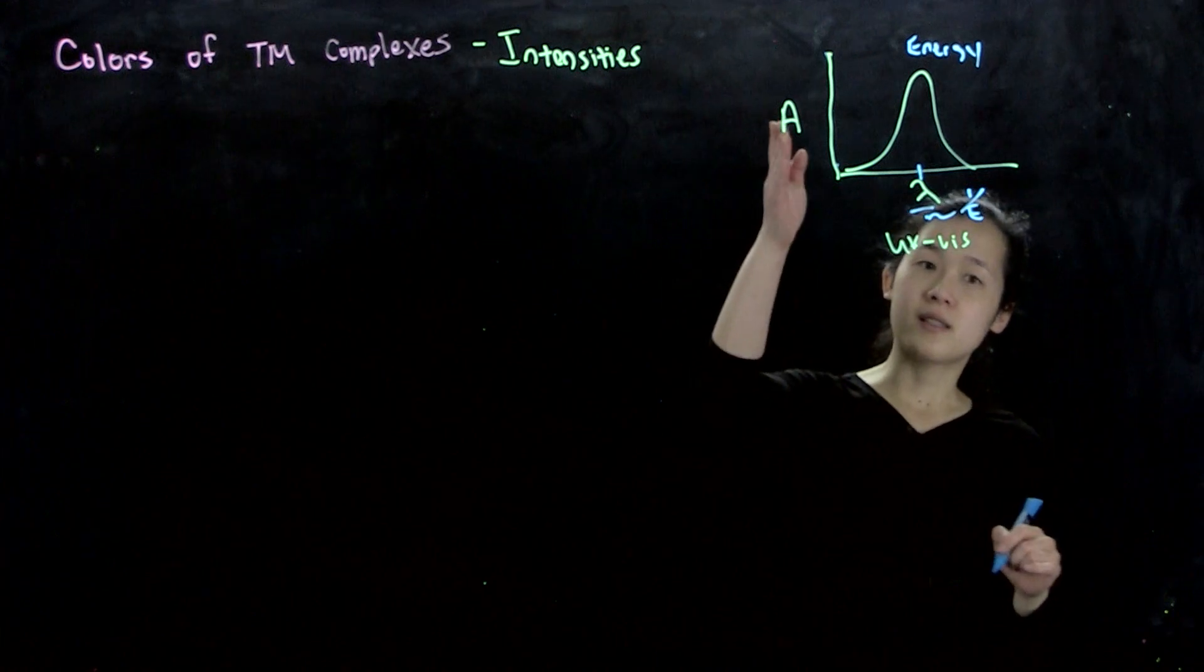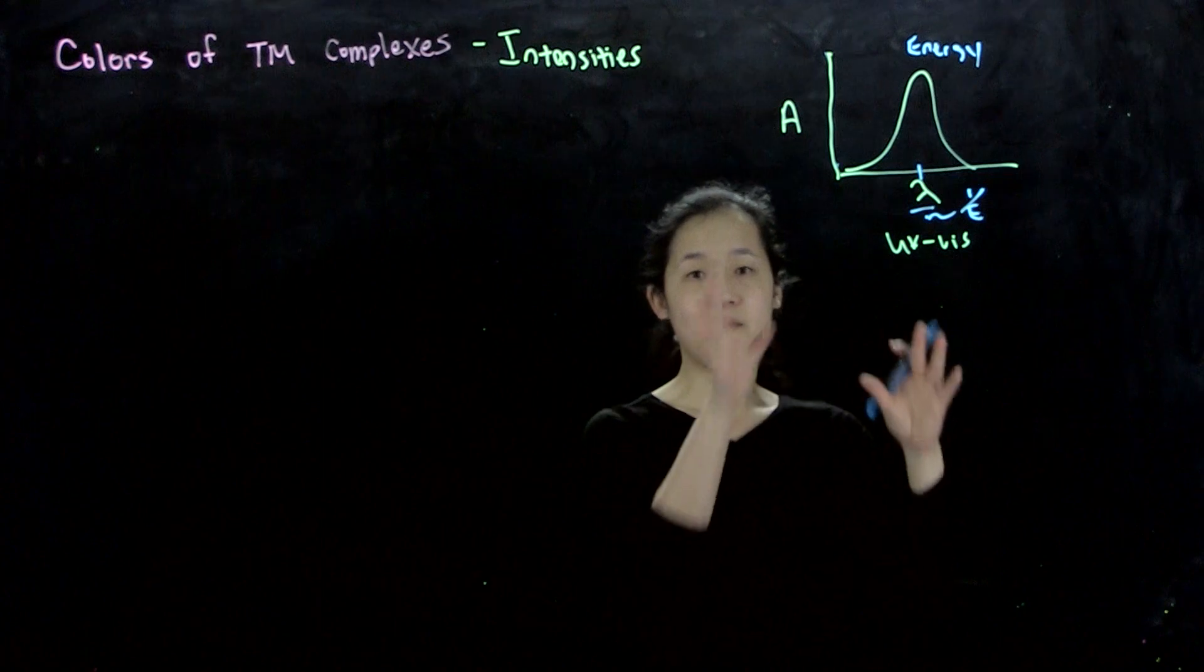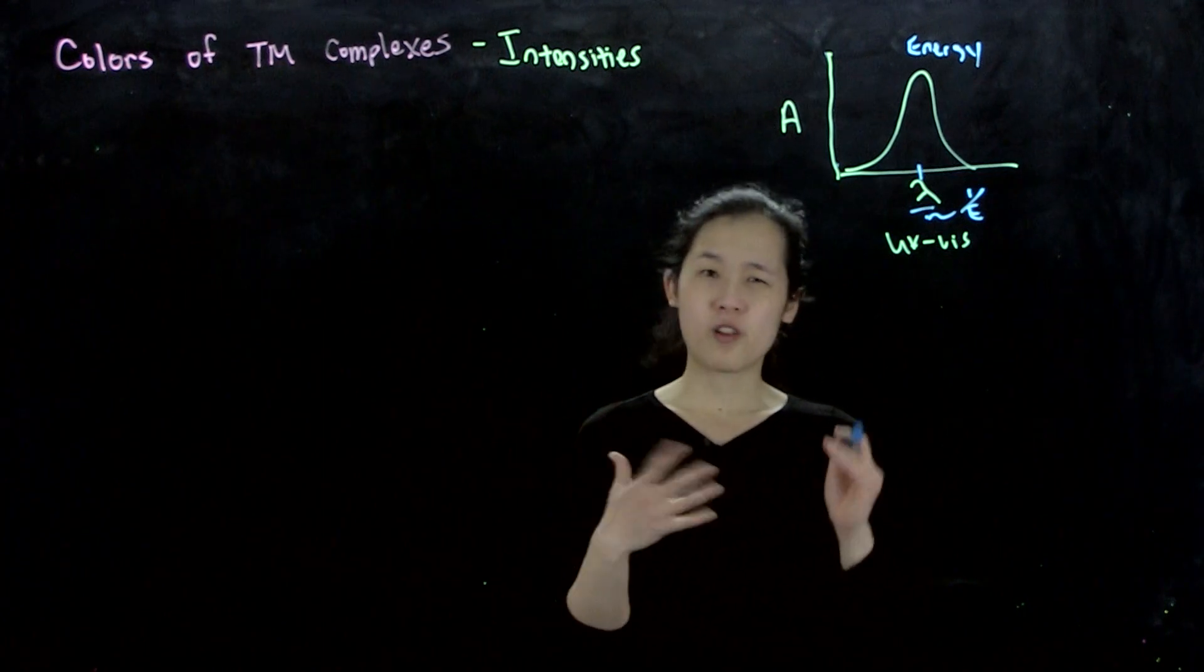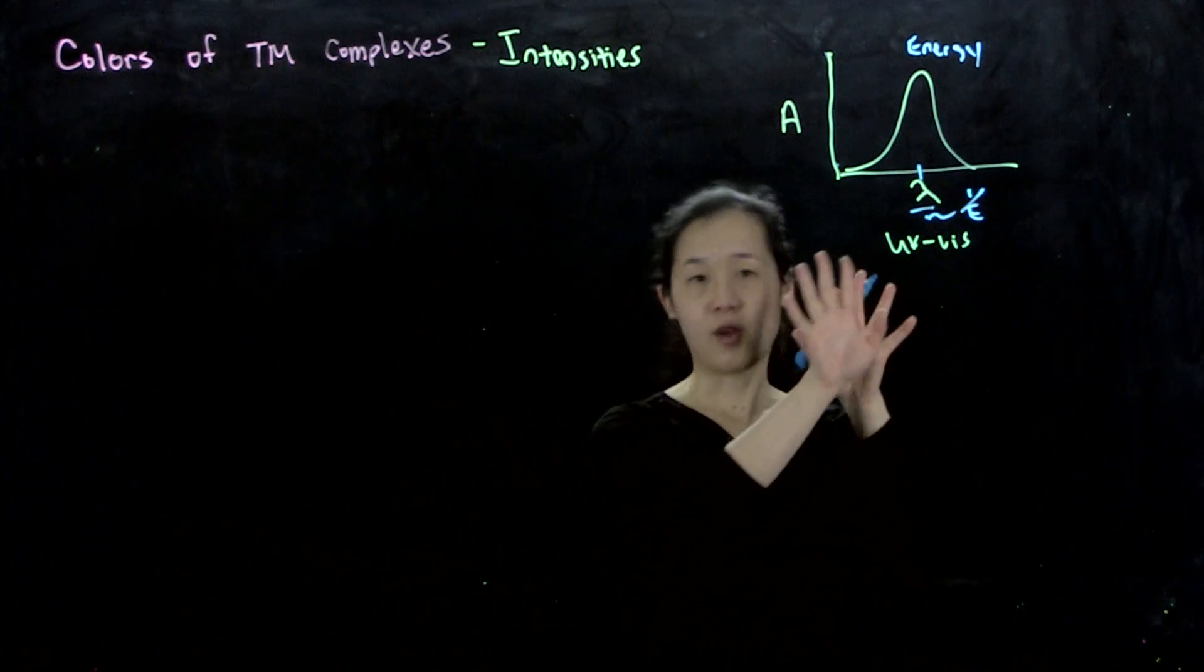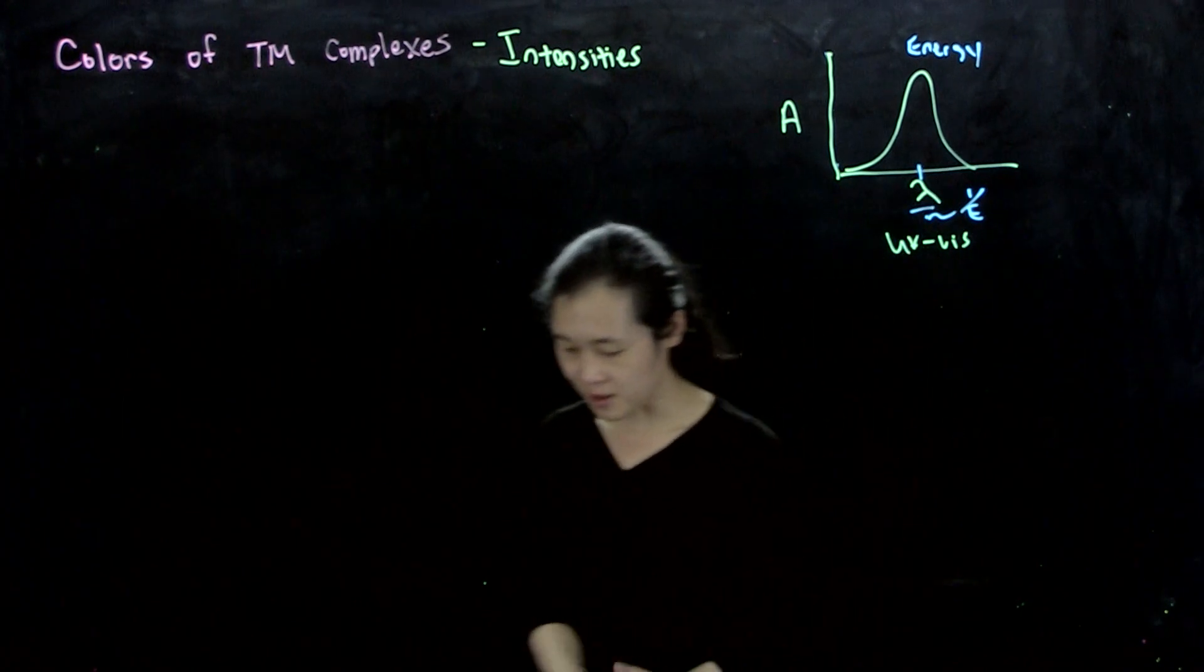And then the absorbance, like I said, was the intensity of how much gets absorbed. So it's kind of more like a quantum effect. It's from the wave function, and it's called the so-called allowedness of the peak. But let's talk about that a little bit.